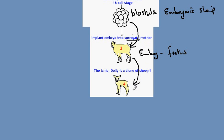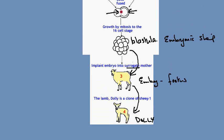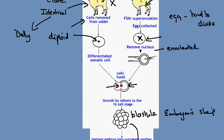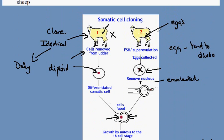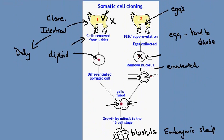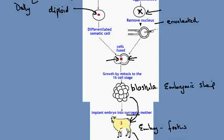The sheep which is born is the one we call Dolly. Dolly is a young sheep just born, but she is genetically identical to the original animal. The pair are a clone, even though their ages are very different.